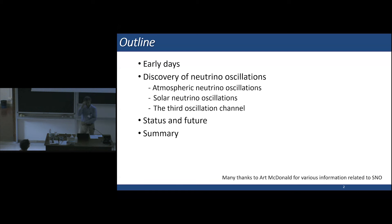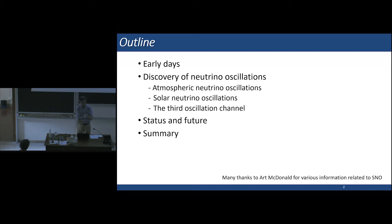This is the outline of the talk. First I'll discuss briefly the early days of neutrinos, then move on to the discovery of neutrino oscillations: atmospheric neutrino oscillations, solar neutrino oscillations, and also the third oscillation channel discovery. Before finishing, I want to talk about the status and future, and then summarize. Some of the materials I use were from the talk presented by Art McDonald, so I want to thank him.